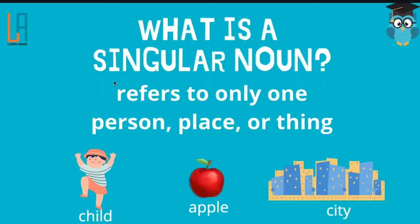So in a noun, we have what we call a singular noun. So what is a singular noun? When you say a singular noun, it refers to only one person, place, or thing. For example, we have one child, we have an apple, and we have one city. So a singular noun is only referring to only one person, place, or thing.